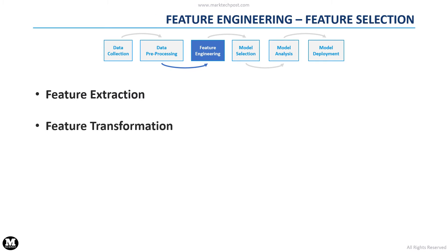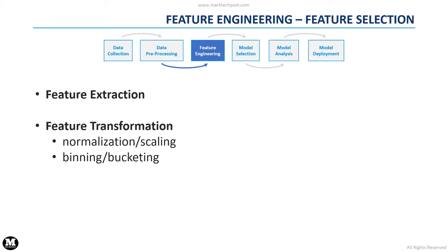We can also apply some transformations to these features. Typically, we have to normalize the values of attributes with different ranges. For example, we can scale all attribute values within the interval 0 to 1 to enable a fair comparison among them. In some datasets, we need to group values into bins or buckets. For example, we can group age values into age groups — instead of counting how many people are 23 or 25 years old, we can create the bucket '20s' and count how many people are 20 to 30 years old.